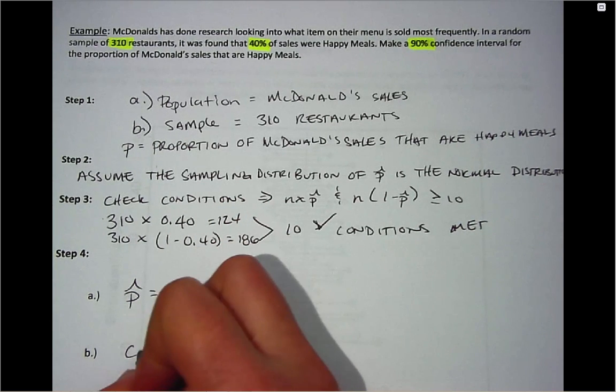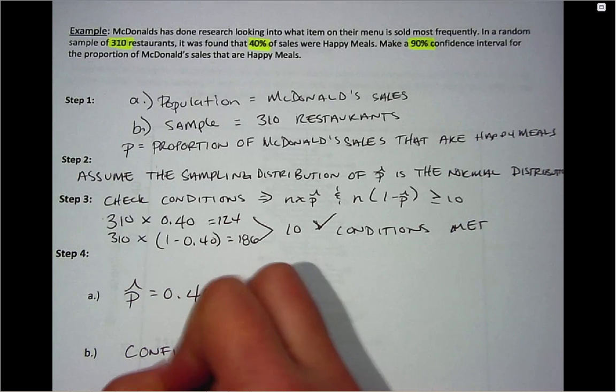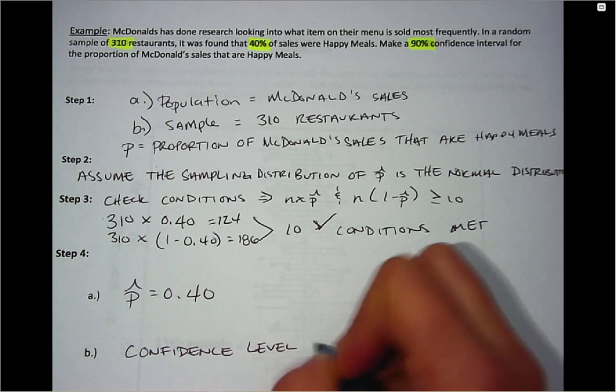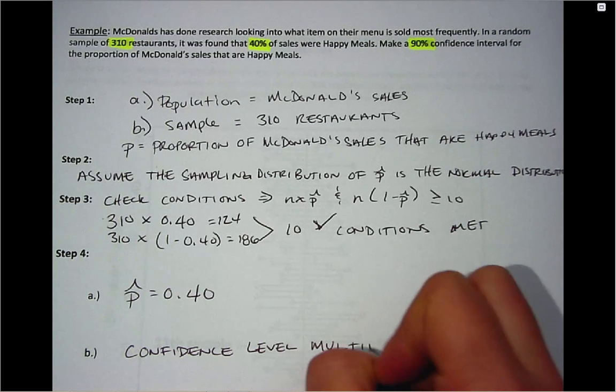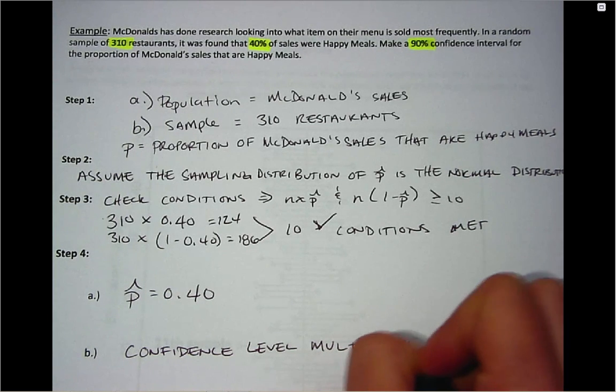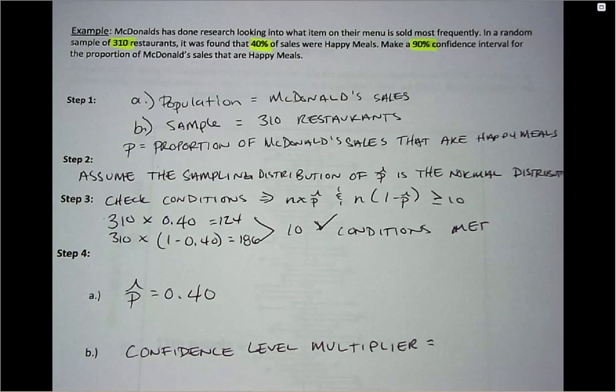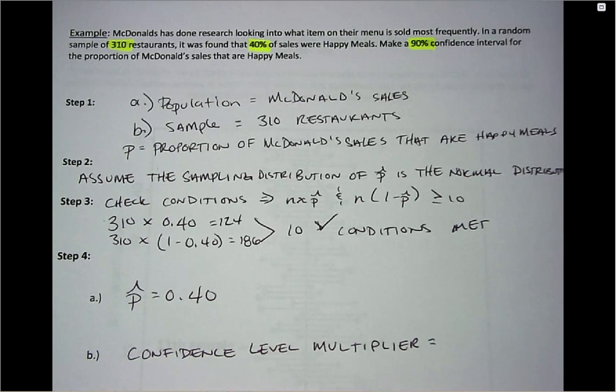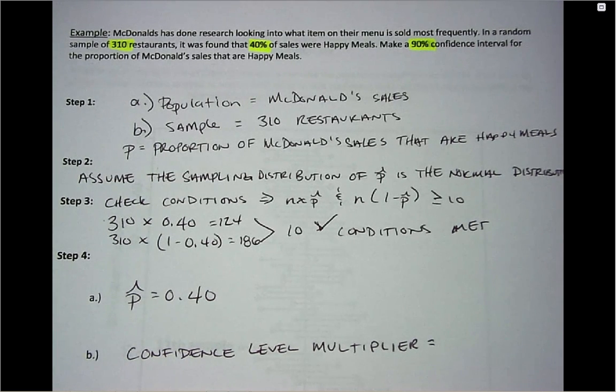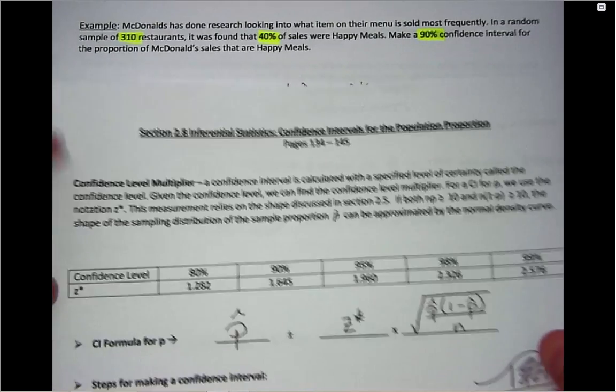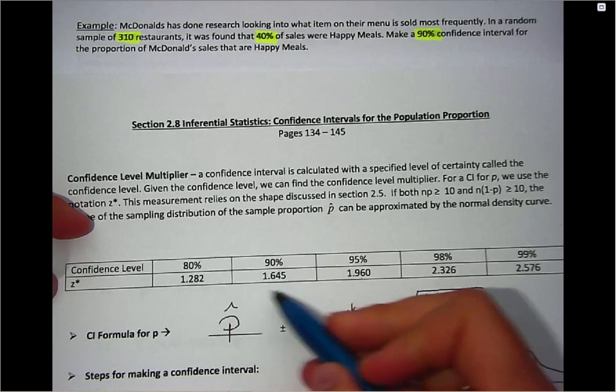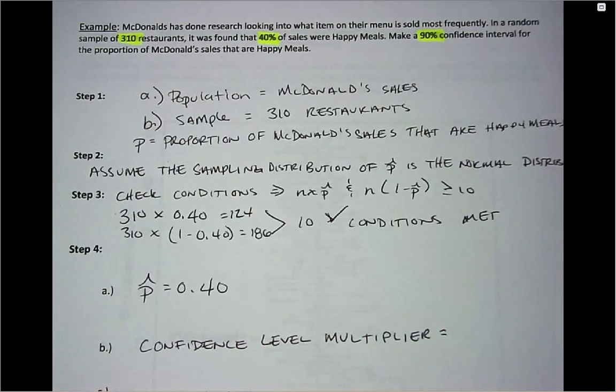Our confidence level multiplier for 90%, which here is the table that you would look it up, we have 1.645 as our multiplier.